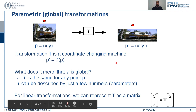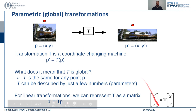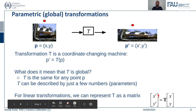For linear transformations, we can represent T as a matrix. Here x and y are the original image coordinates and x-prime, y-prime are the transformed image coordinates. This is a compact way of representing the transformation, which we can write as p-prime equals T of p.